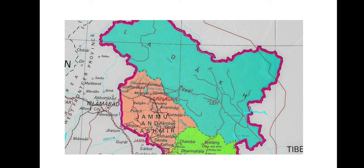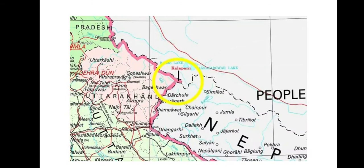The new political map also shows the Kalapani area — here you can see it — as part of India. The Nepal government is clear that the area lies within its territory. Nepal stated that it was a media report which brought its attention to the fact that Kalapani has been included in the area.